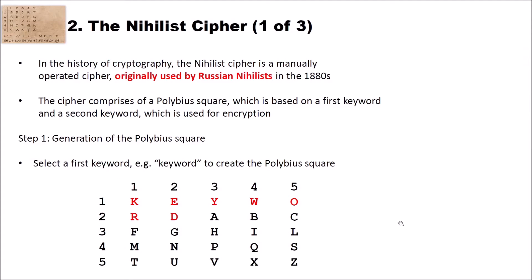Let's have a look at the nihilist cipher. In the history of cryptography, the nihilist cipher is a manually operated cipher originally used by Russian nihilists in the 1880s. The cipher comprises a Polybius square based on a first keyword, and a second keyword used for encryption. The nihilist cipher is, as I already mentioned, a polyalphabetic cipher.